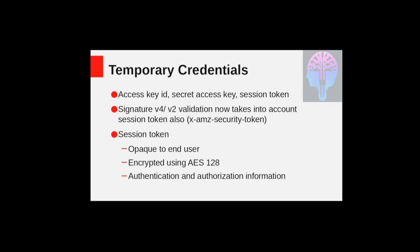Whenever a user makes any S3 call using these temporary credentials, the RGW extracts authentication and authorization information from the session token. The authentication information includes the access key ID and the secret access key, using which it does all the V4 and V2 signature validation. It also has the authorization information which consists of the permission policies attached to the roles, and these permission policies determine what kind of S3 operations the end user can actually perform.